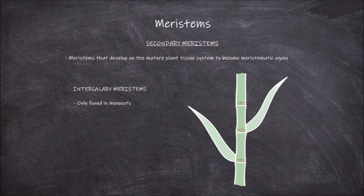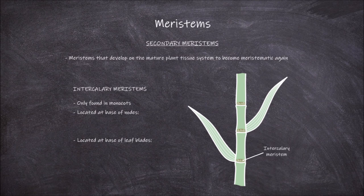Intercalary meristems are only found in monocots. They are located at the base of nodes and at the base of leaf blades. When at the base of nodes, they aid in the growth of the plant in the form of elongation of the stem, such as in bamboo plants. When at the base of leaf blades, they aid in the regrowth of the leaf from the base, such as in grasses. This allows them to keep growing even when they get cut.